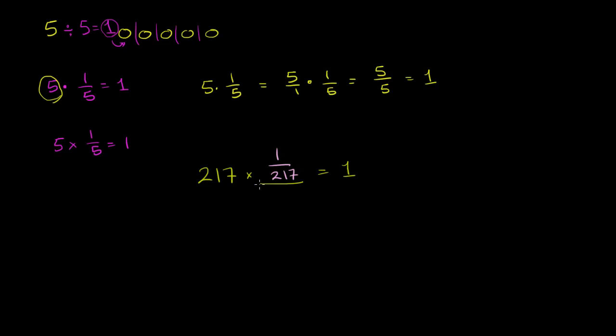which is, once again, a word that is fancier than the actual concept. You're just multiplying by the inverse of this number. Another way to think about it is if I have five things, and if I were to take one fifth of those five things, how many things do I have? Well, if I take one fifth of five things, I have exactly one thing right over here.